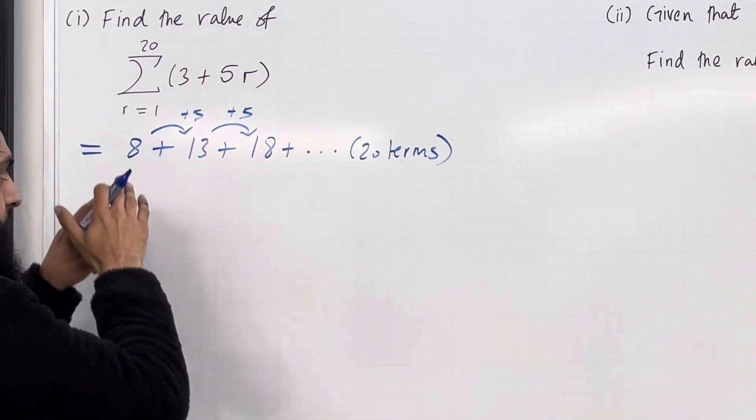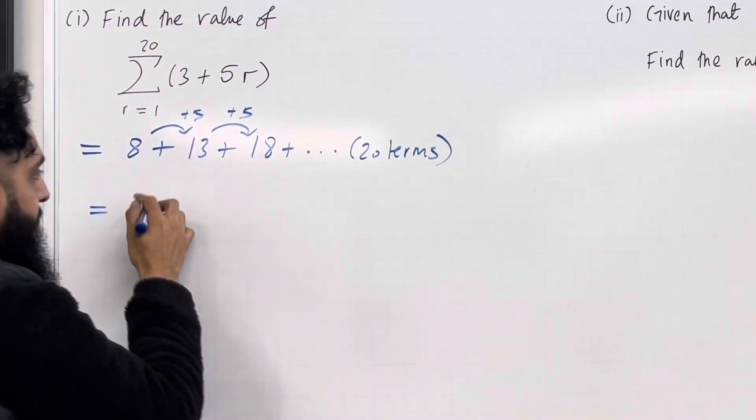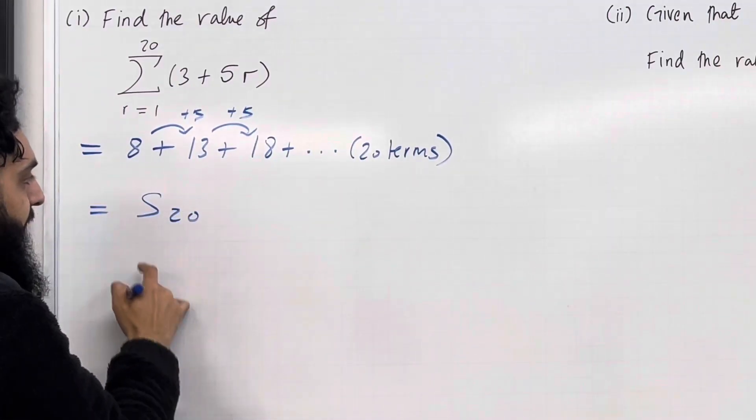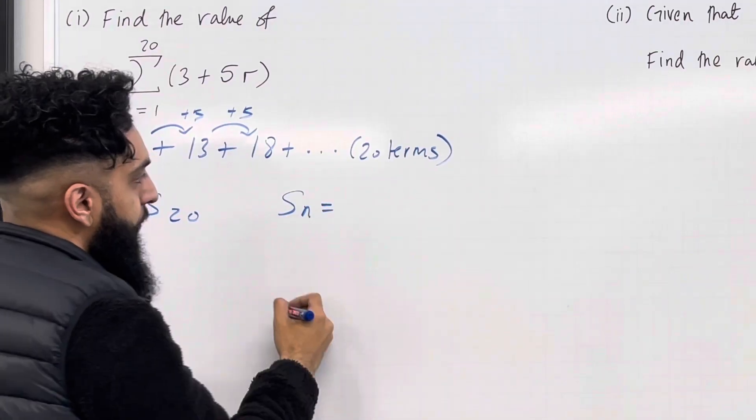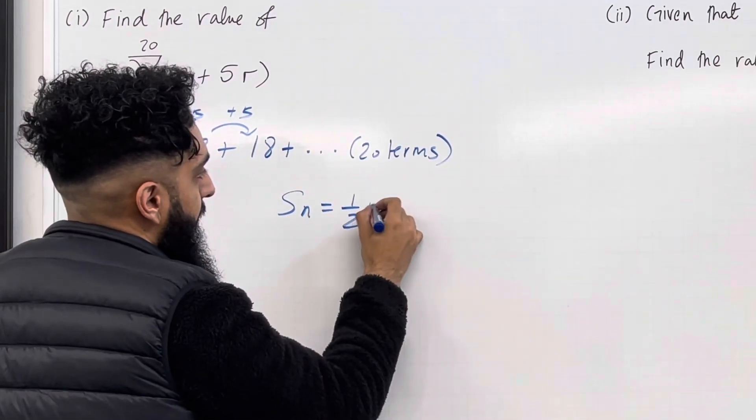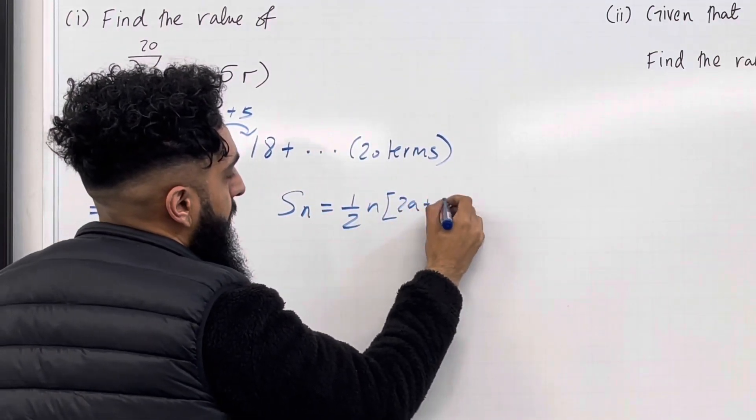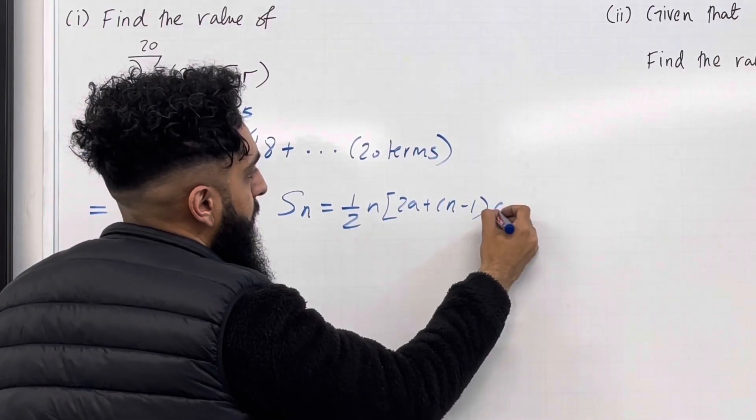The notation that we use for the sum of the first 20 terms is S20. So we're calculating S20. The SN formula for an arithmetic series is a half n square bracket 2a plus n minus 1 in bracket multiplied by d, close square bracket.